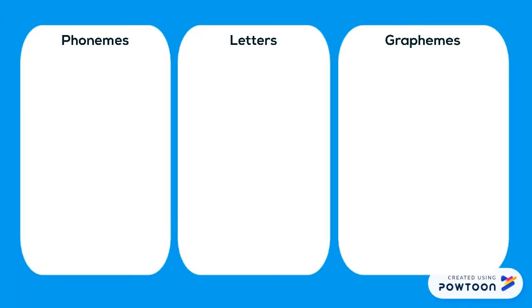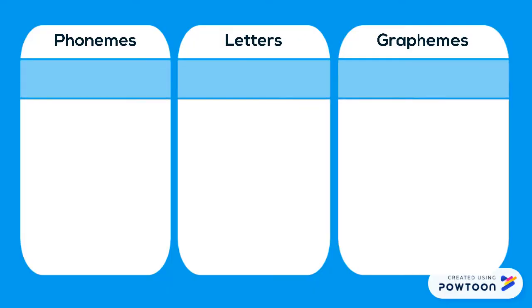Some phonemes are easier to match with their grapheme than others. There are 47 phonemes in the English language and only 26 letters, so sometimes we need to use a group of letters to represent a single phoneme.